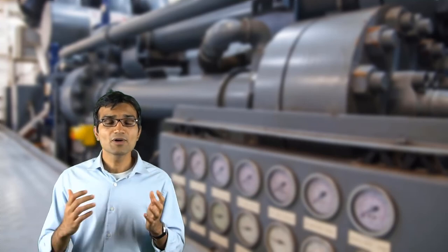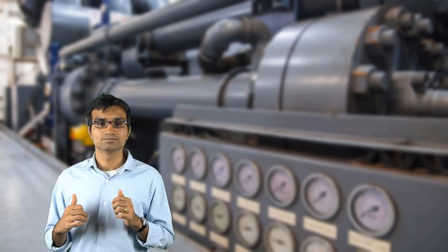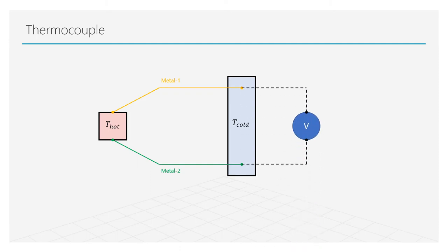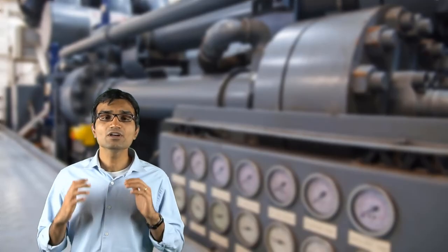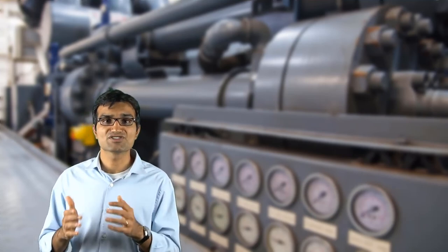A thermocouple, on the other hand, operates on the principle of Seebeck effect. Two different metal strips produce an electromotive force or voltage when there is a temperature gradient between them. The thermocouple senses this voltage and passes it to a data logger which provides the final temperature reading. It is important to note that these temperature measuring devices only provide a point measurement.